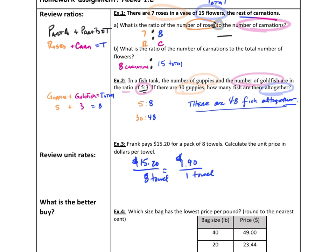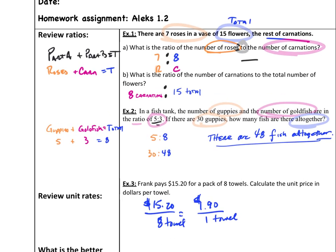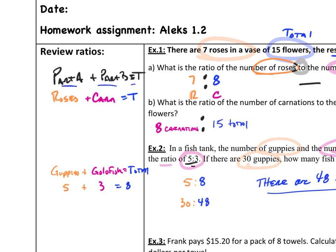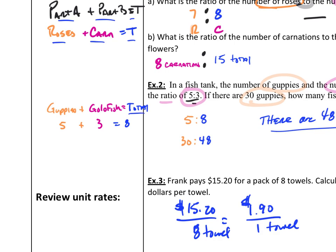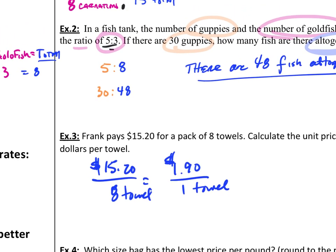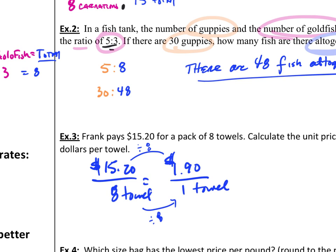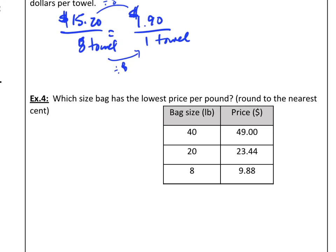Okay, so these should be your answers. If you didn't get these right, go back and look at your notes — there's a process to this, and you should have questions. Remember what we talked about: part A plus part B equals the total. We had roses and carnations in our total, and guppies and goldfish in our total. When you use unit rates, we're always going to make the denominator one, so we divide by eight.